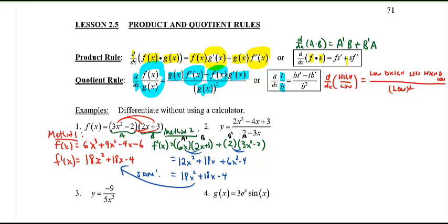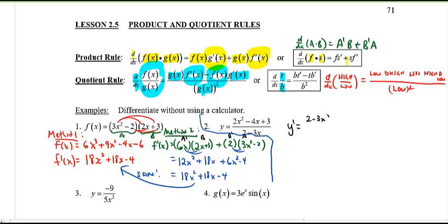For a simple polynomial product you could just multiply out, but I gave you that example to practice the product rule. Now number two is a quotient, so it calls for the quotient rule. Here low = 2 − 3x and high = 2x² − 4x + 3. Let's apply: low d(high) less high d(low).